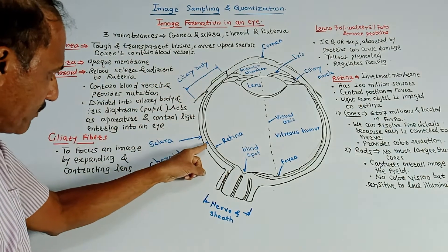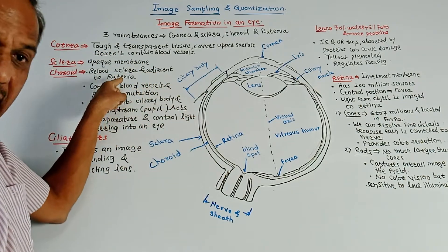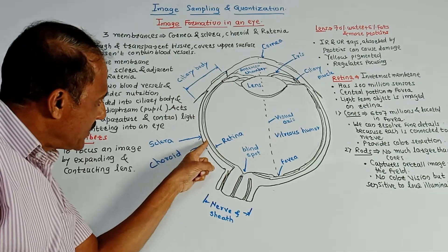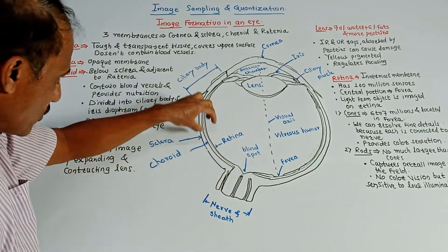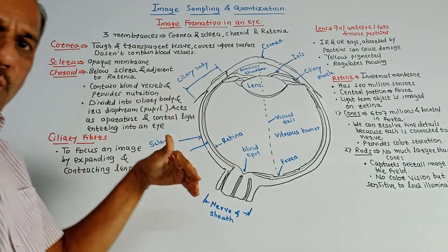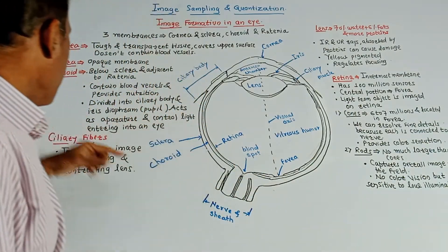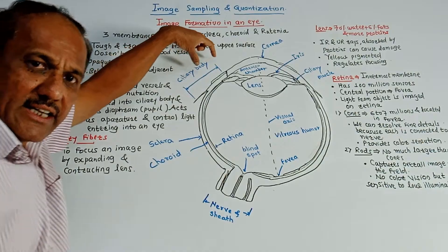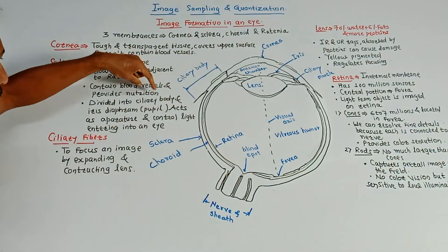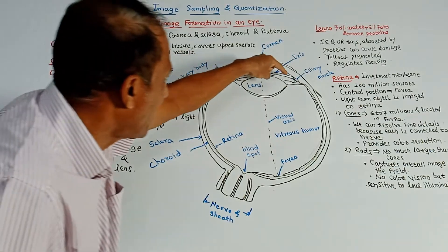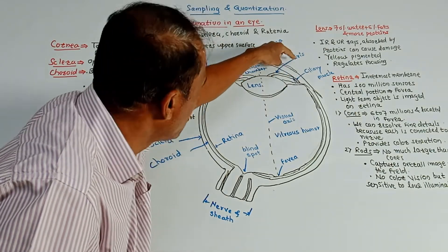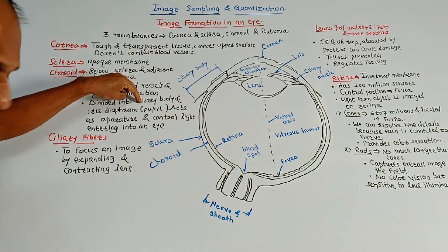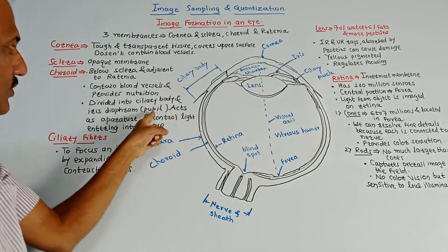Then choroid, which is below the sclera and adjacent to the retina. Choroid contains blood vessels and provides nutrition to the eye. It is divided into ciliary body and the iris diaphragm, which is also called the pupil.